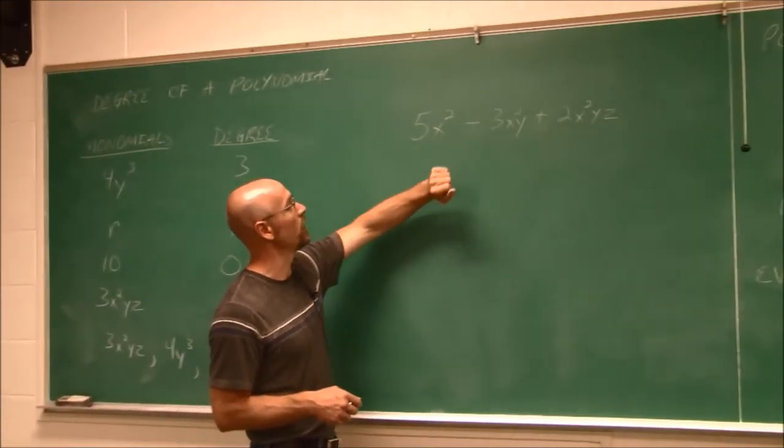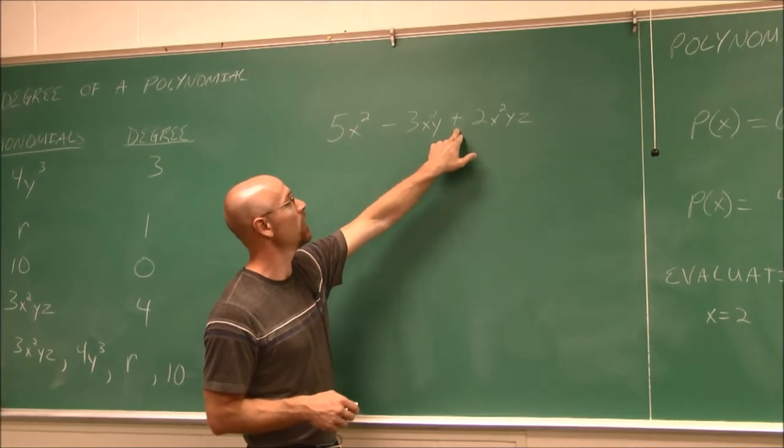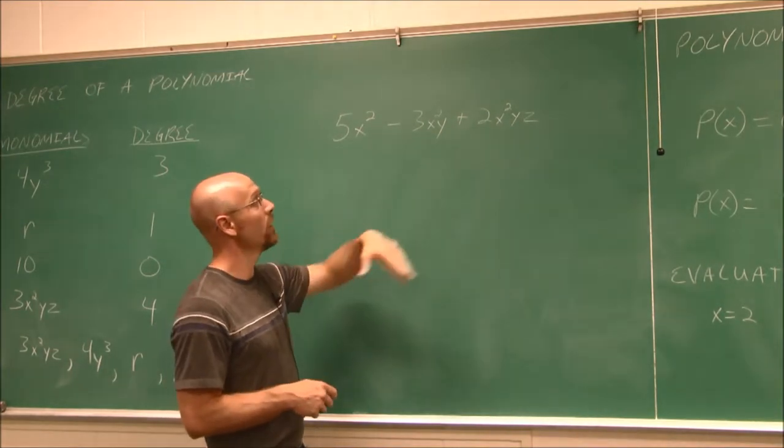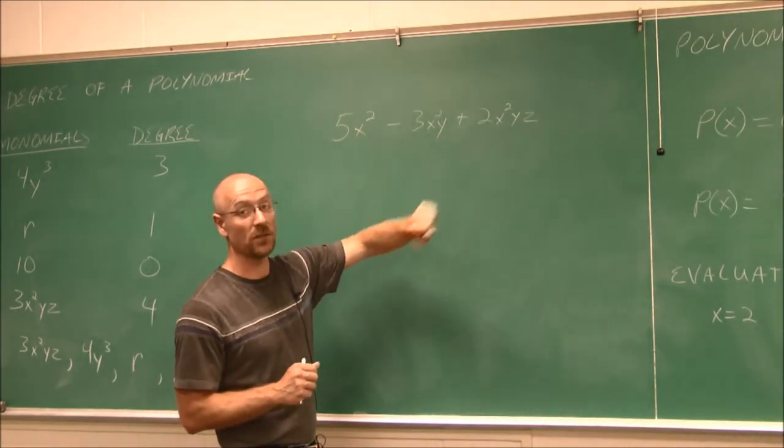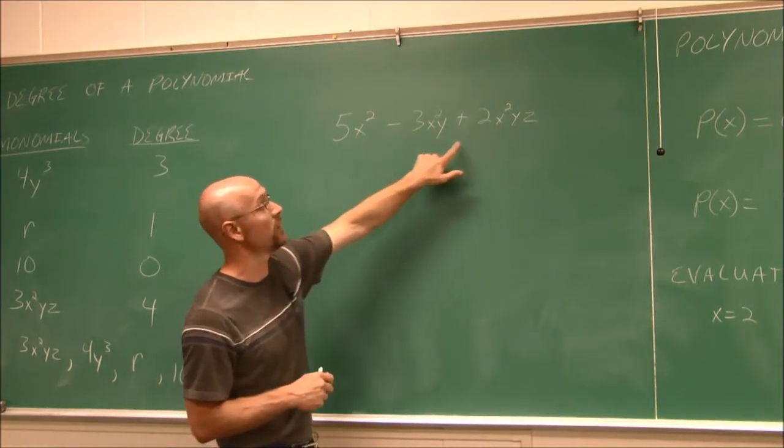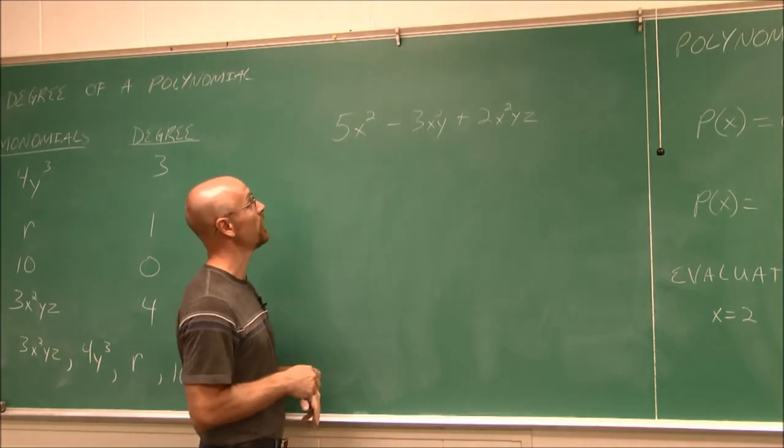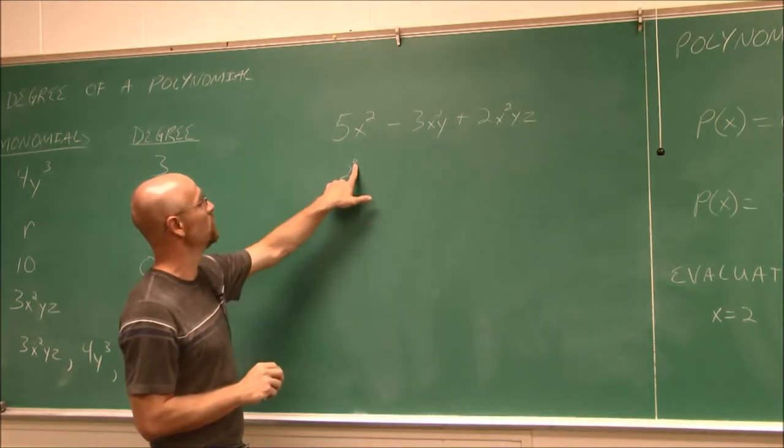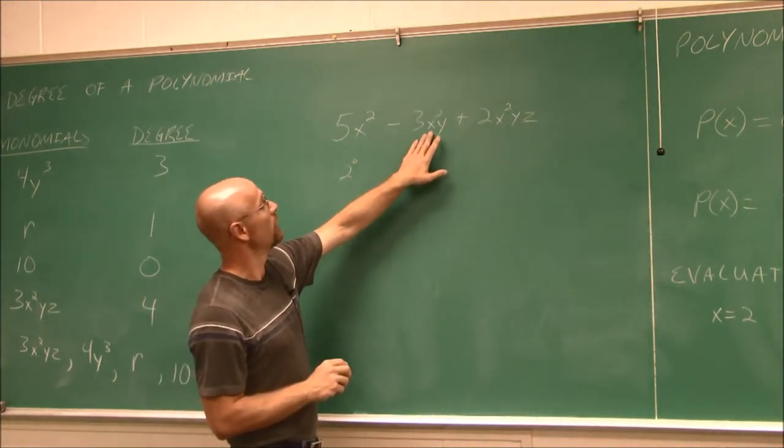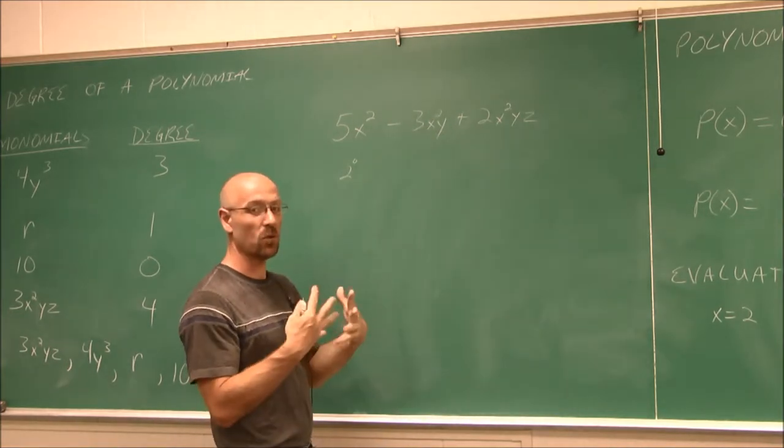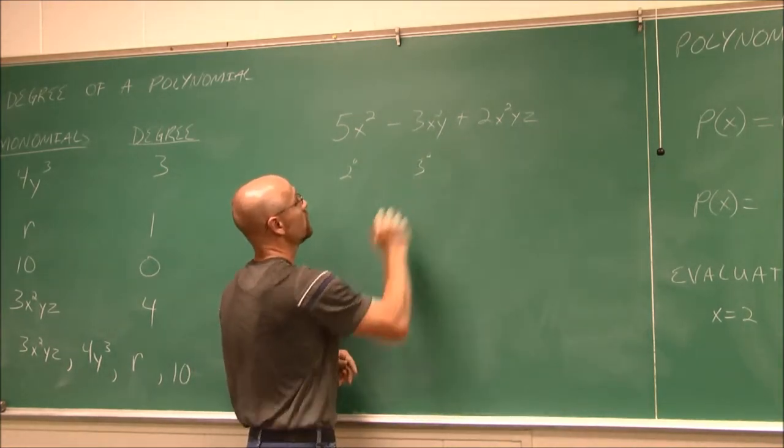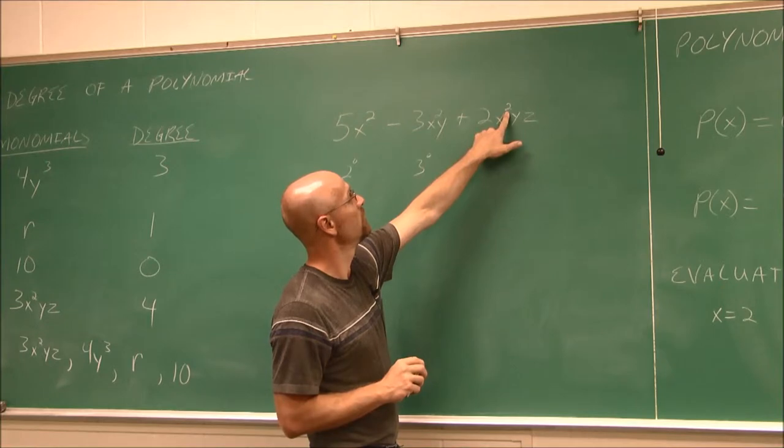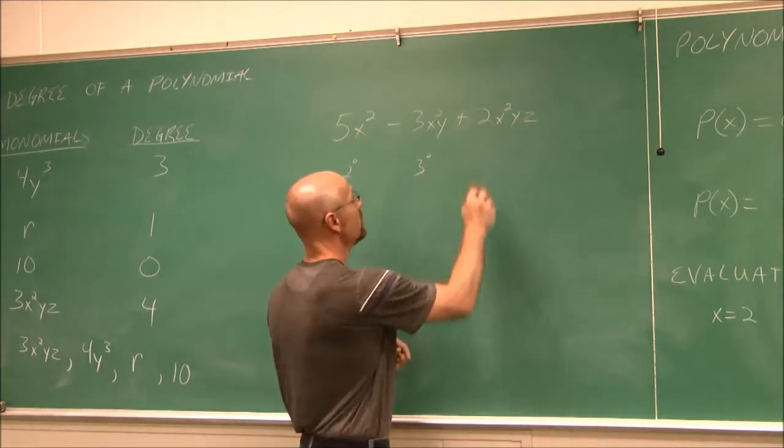I have 5x squared minus 3x squared y plus 2x squared yz. So we have many variables. They have different powers. So the first thing I'm going to do is assess the degree of each of these terms, just like we did with the monomial, even though this is a trinomial, because we have three terms that are separated by addition or subtraction. So if I look at this, it is of degree 2. And I'm going to write 2 degrees. And that's a little symbol we use for degrees. I look at this one. I say, well, we have 2x's and 1y. That's a total of 3. So this would be a third degree monomial. And this last term here is x squared, 1y, 1z. So it is a fourth degree.